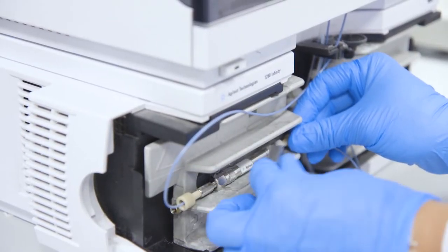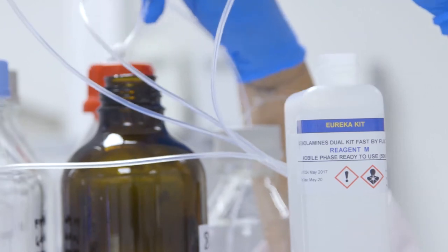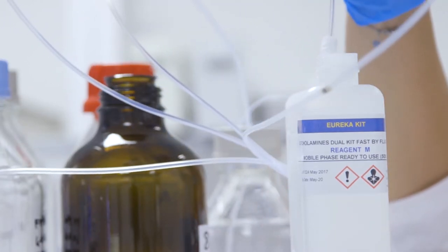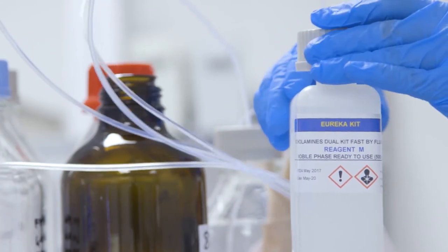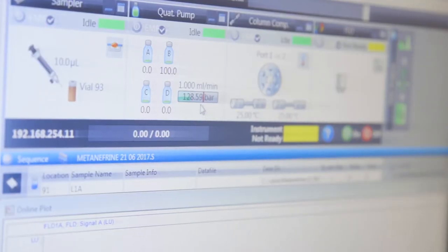Insert the floater into the mobile phase reagent M and let the pump flow at 1.0 milliliters per minute for 15 minutes. After this we will be ready to make the first injection.